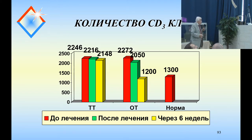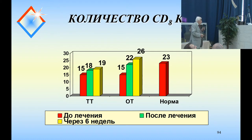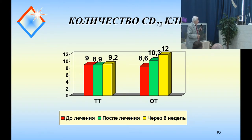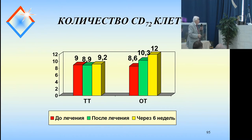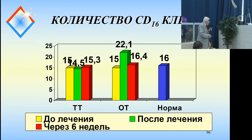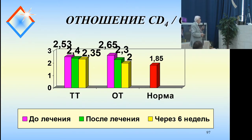Next slide please. The number of CD3 cells — you can see 1,130; the normal standard is shown. After ozone therapy, for CD8 cells we have the same result — the norm is 23 and 26 after ozone therapy. The yellow column shows results after six weeks. CD72 cells: 7; CD16: the norm would be 16 and we got 16.4 after ozone therapy, following six months.